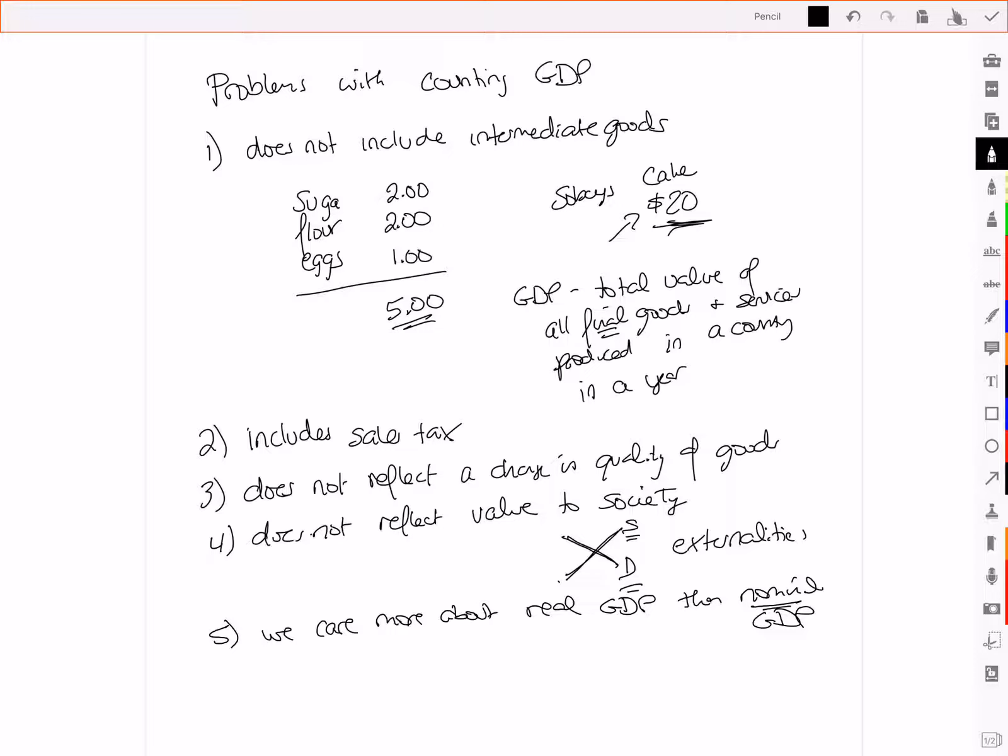Well, nominal GDP would increase, and this would tend to suggest that the economy has grown. So we actually care more about real GDP, which is where we take out inflation. And in fact, in the coming levels, we're going to look at how do you take out inflation? How do you find real GDP?